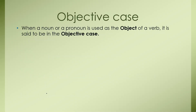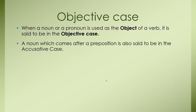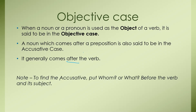Objective Case. When a noun or a pronoun is used as the object of a verb, it is said to be in the objective case. A noun which comes after a preposition is also said to be in the accusative case. It generally comes after the verb. Note: to find the accusative case, put 'whom' or 'what' before the verb and its subject. Example: 'Worry broke the window.' Here, 'window' is the object as it comes after the verb 'broke', and when we ask the verb, we get the answer 'the window'.